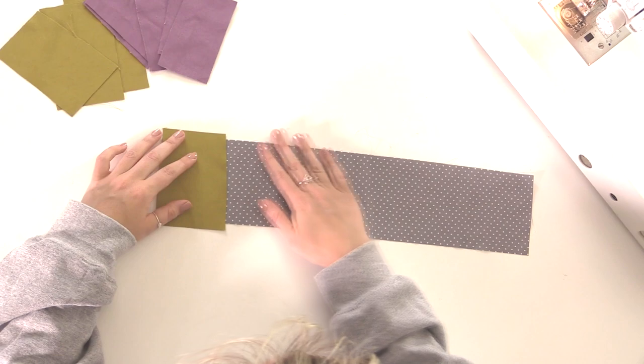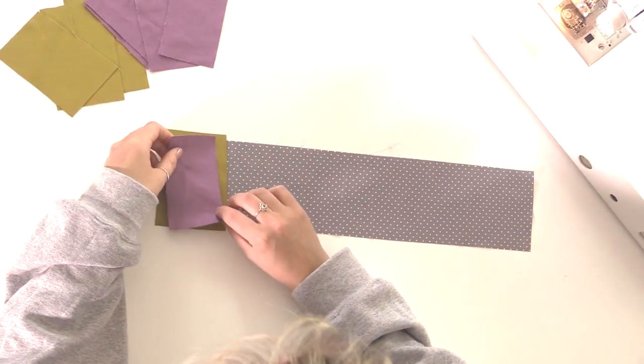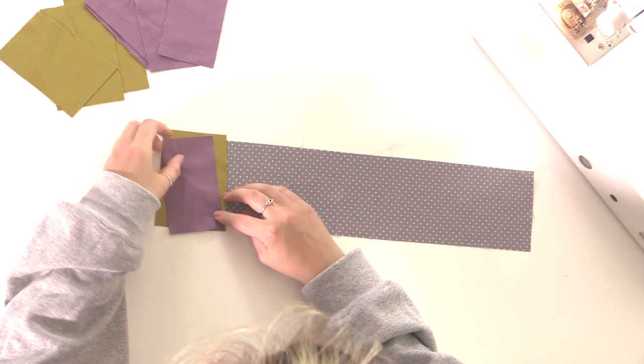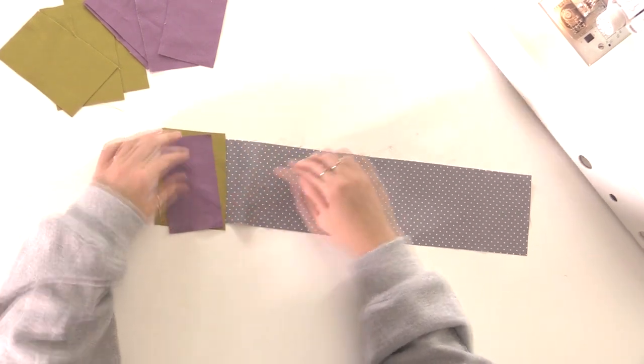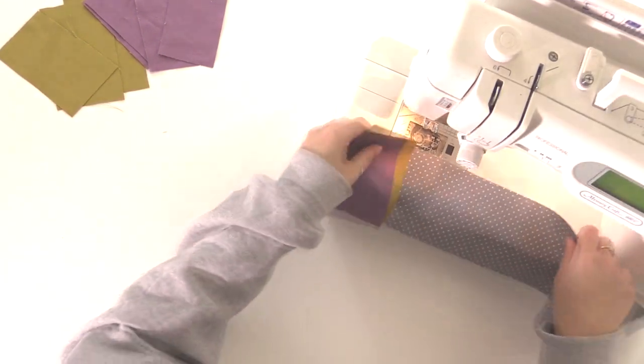Take your first strip of fabric and place it on top of the scrap piece of fabric on the edge. If your fabric is patterned, make sure the pattern is facing up. Take your second strip of fabric and place that on top of the first piece at an angle. This gives it the wonky effect.